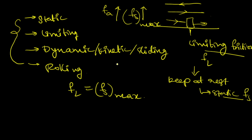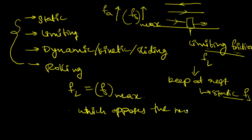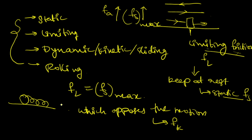Coming to dynamic or kinetic friction or sliding friction: after this limiting friction, the object keeps on moving. The friction which opposes the motion of the object is known as dynamic friction or kinetic friction, denoted with Fk. Whenever a ring starts rolling on a surface, the friction which opposes this motion is known as rolling friction.